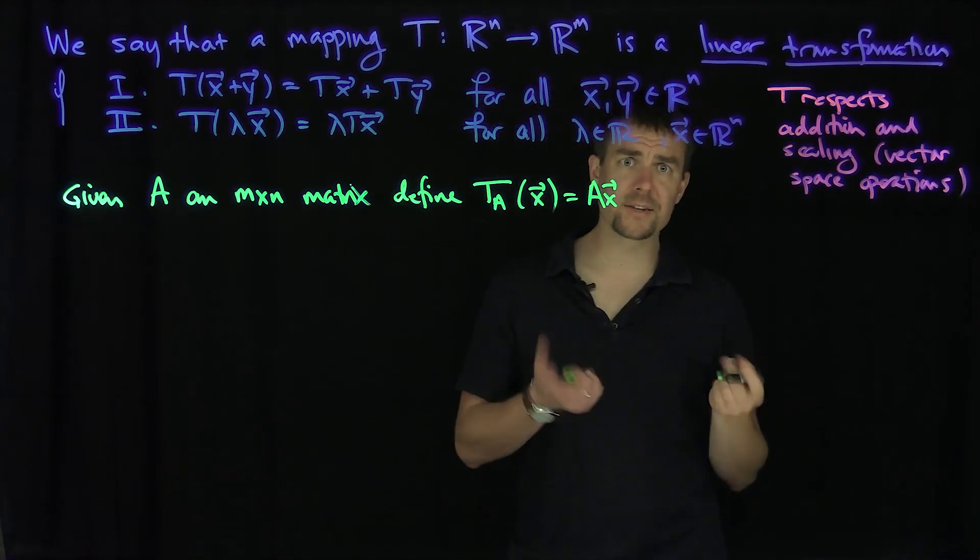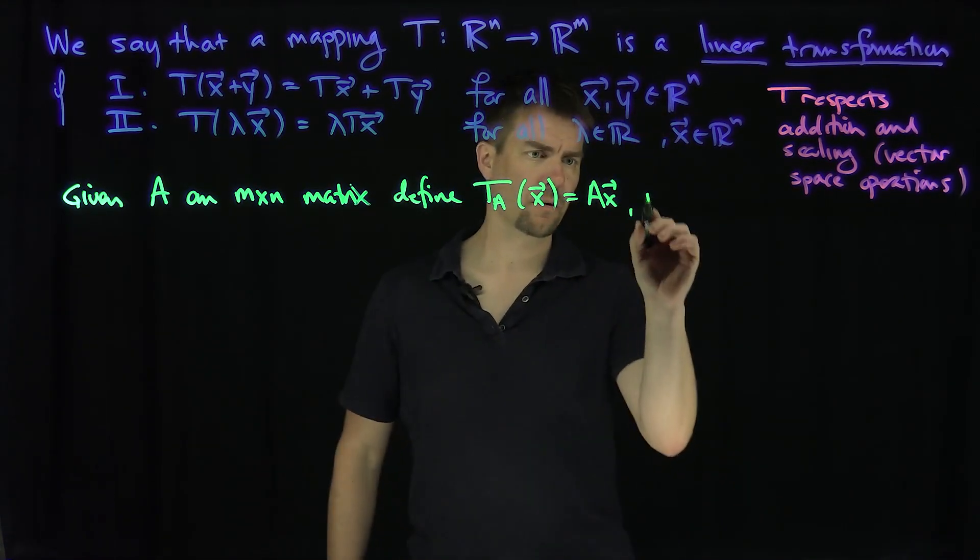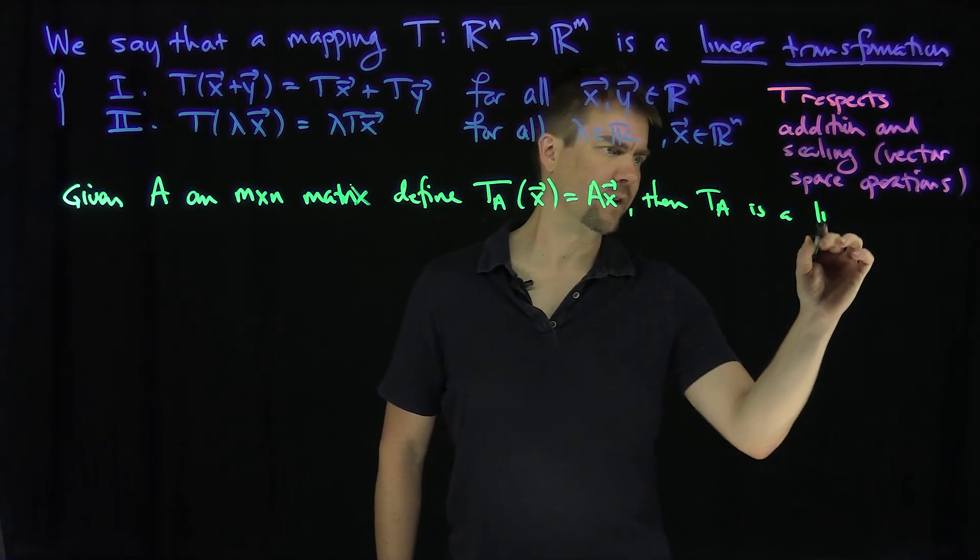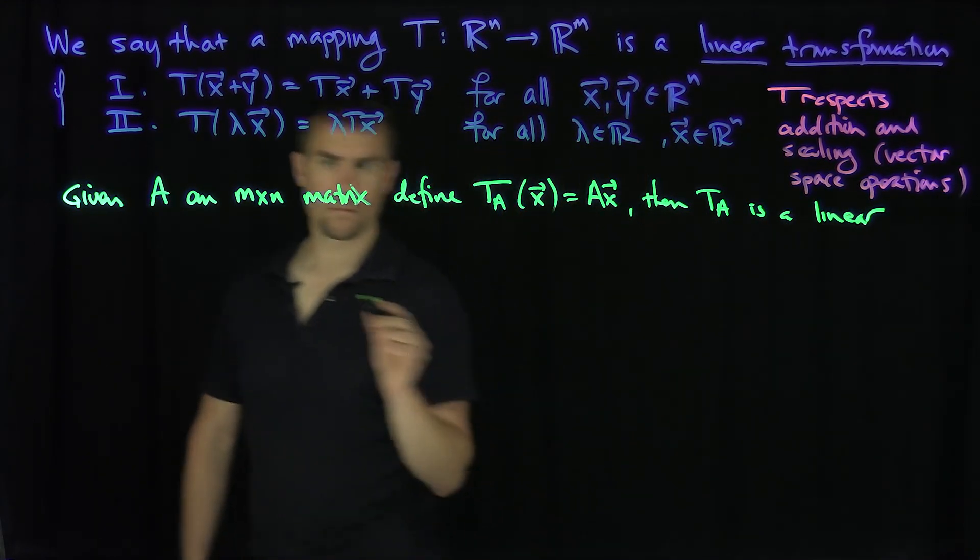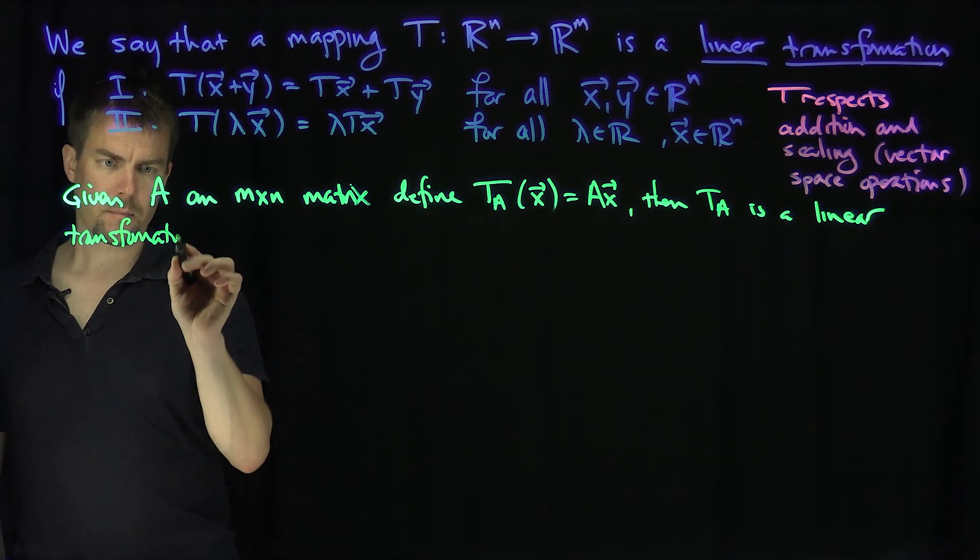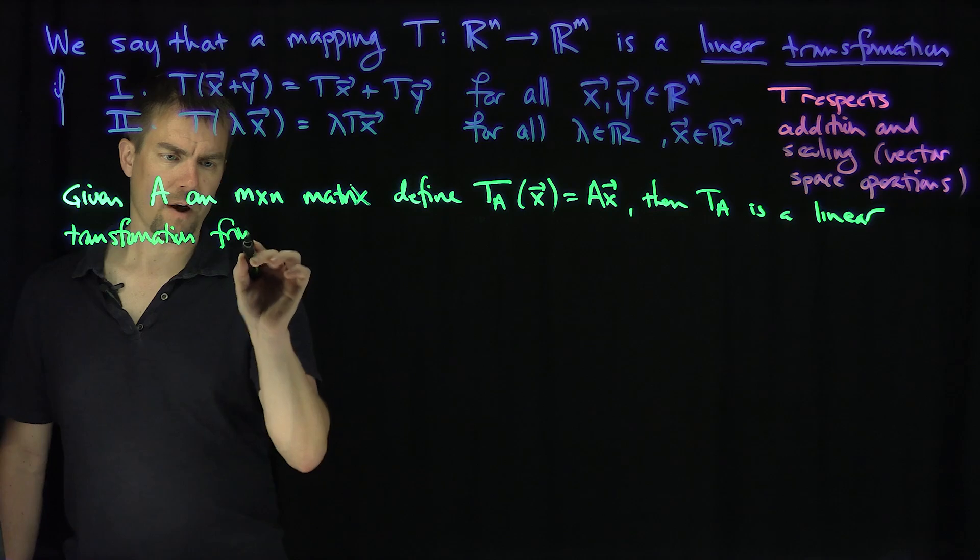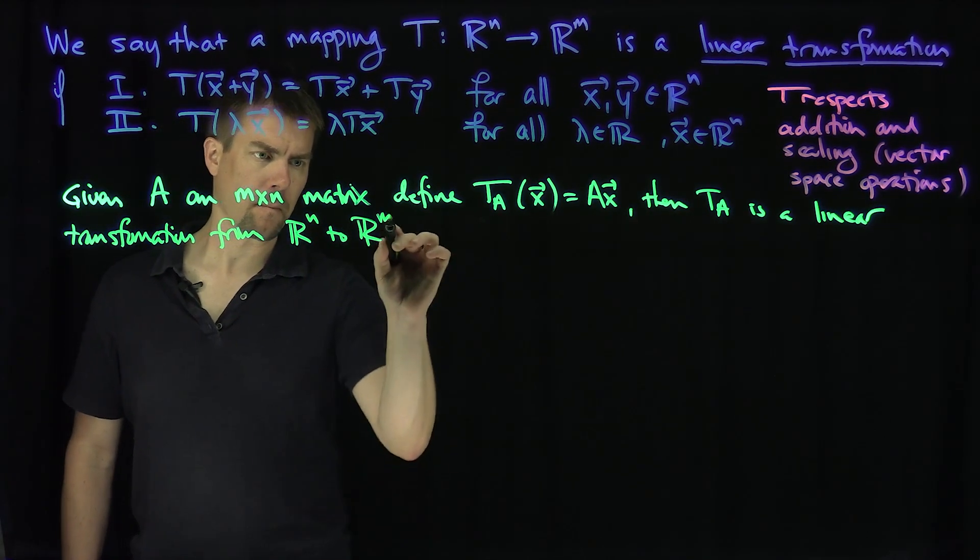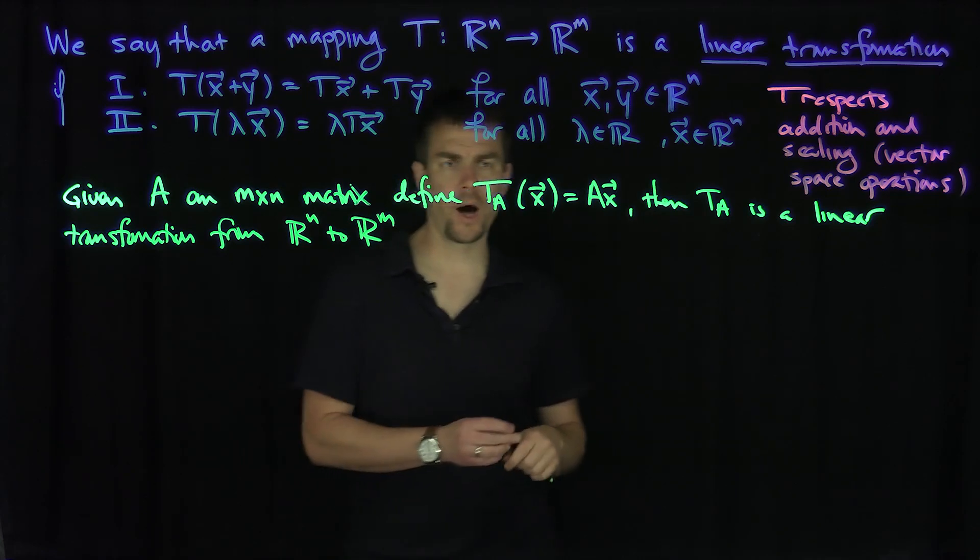Then T_A is a linear transformation from R^n to R^m. Okay, let's see why.